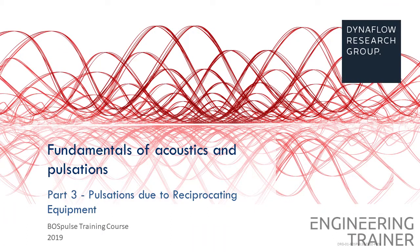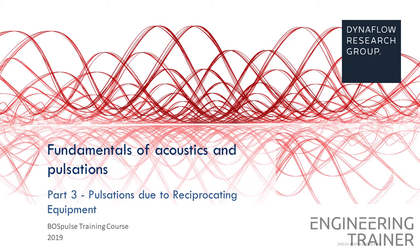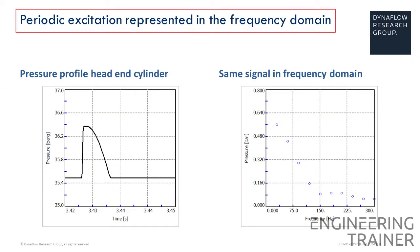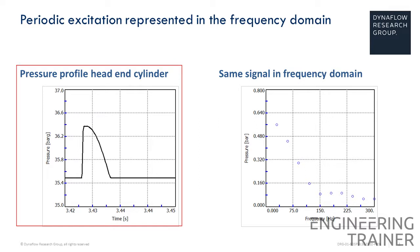Now let's briefly have a closer look at pulsations due to the reciprocating equipment. We'll first discuss how periodic excitation is represented in the frequency domain. The left plot shows the pressure profile at the head end of the cylinder in the pump. As shown in part 1 of this lecture, it is a periodic changing signal. This pressure peak is repeated over and over as the piston moves back and forth.